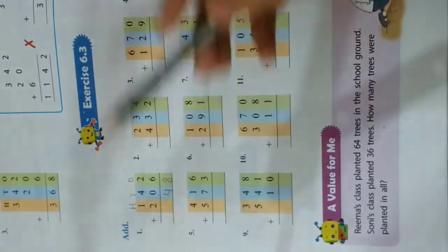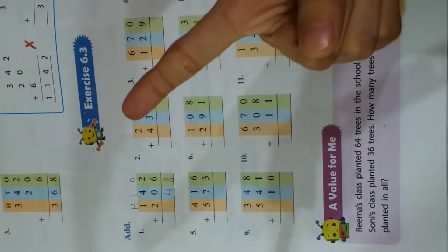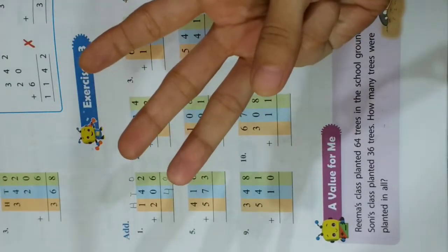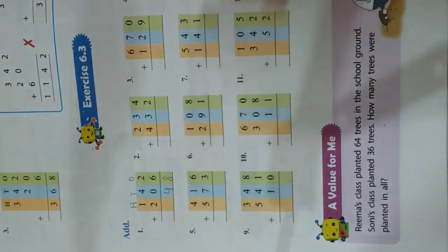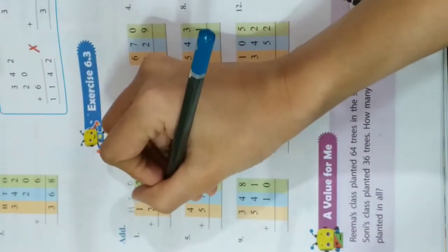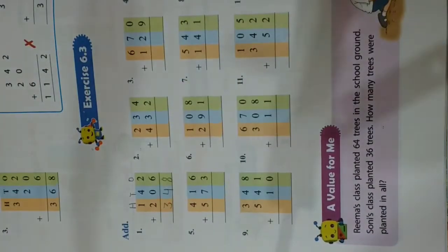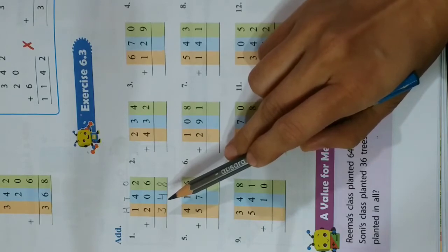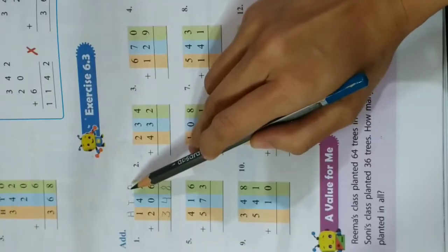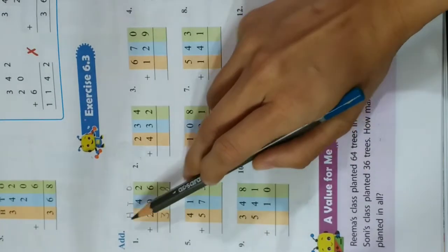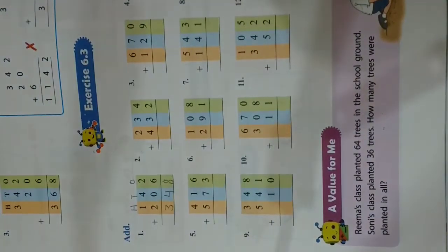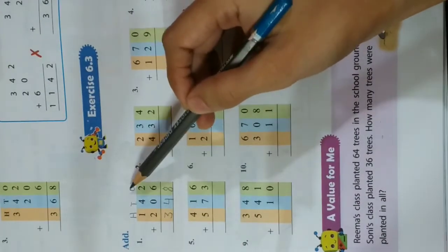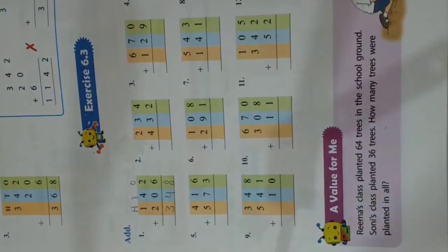Now at hundreds place, the first number is 1 — take out 1 finger. The second number is 2 — take out 2 fingers. Count all: 1, 2, 3. You get 3, so write 3 over here. So 3, 4, 8 — it becomes 348. 3 is at hundreds place, 4 is at tens place, 8 is at ones place.